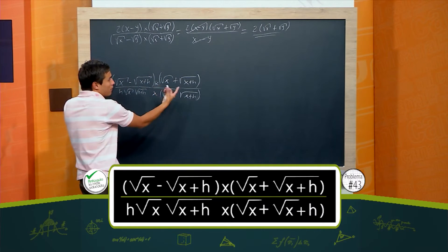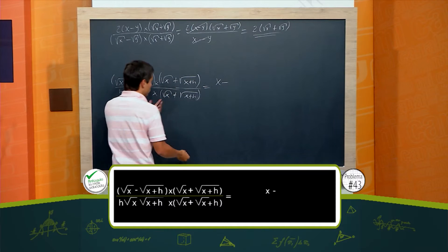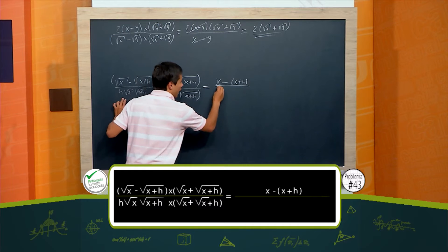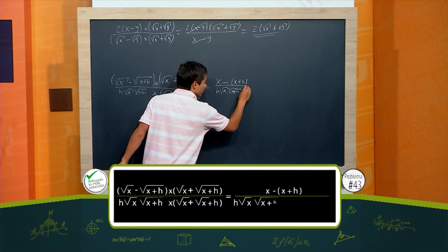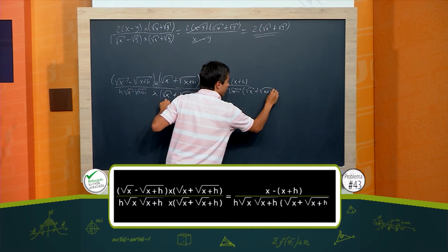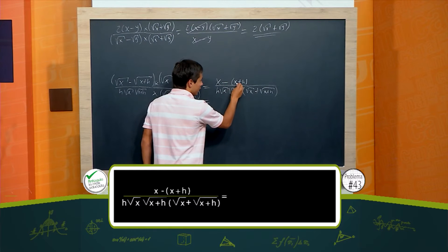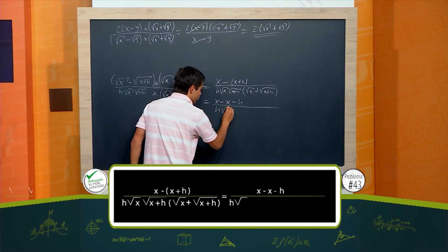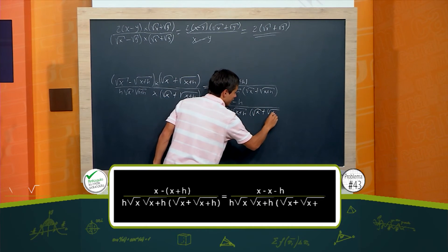Ahora, el de arriba me va a dar lo mismo: es la solución de una diferencia de cuadrados, entonces me da el primero al cuadrado menos el segundo al cuadrado, que es x más h, sobre h raíz de x, raíz de x más h, y por raíz de x más raíz de x más h. Bien, pero esto ¿qué me va a dar? Me va a dar x menos x menos h, sobre h raíz de x, raíz de x más h, raíz de x más raíz de x más h.